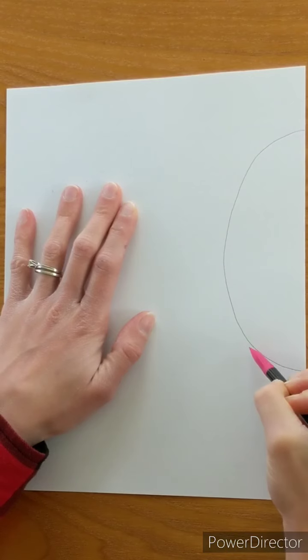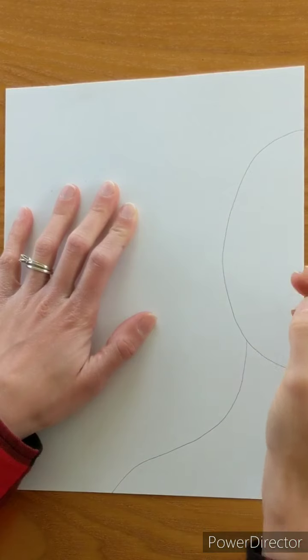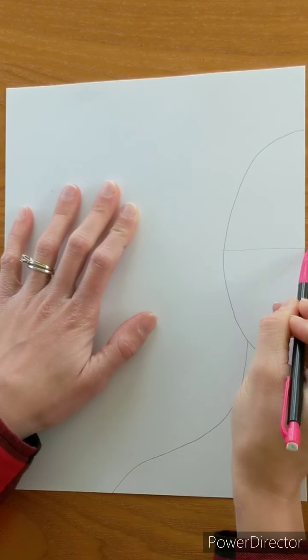After you're done, from the bottom of your chin you're going to draw a curved line to the bottom of your paper for your neck and your shoulder.